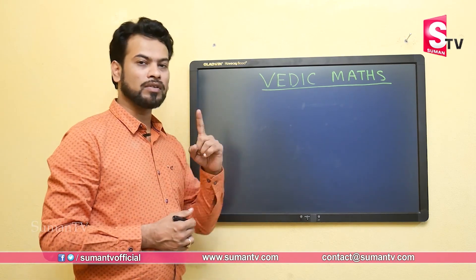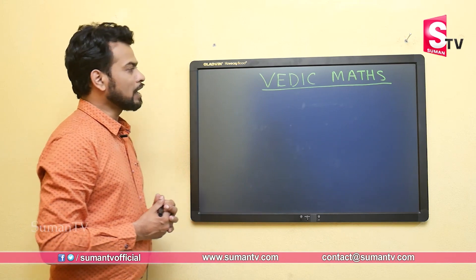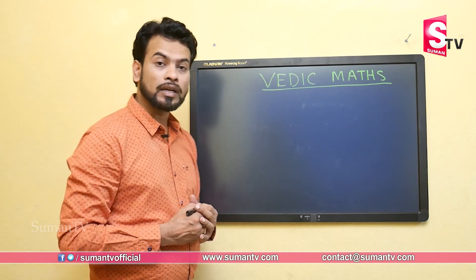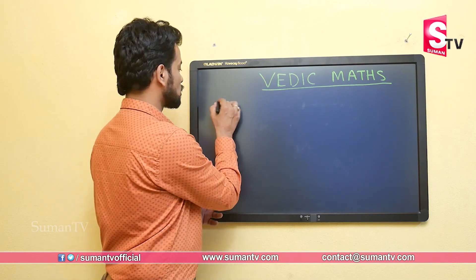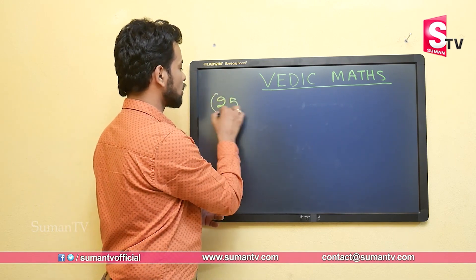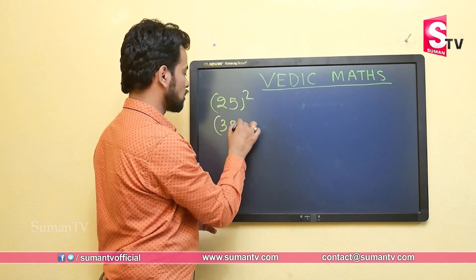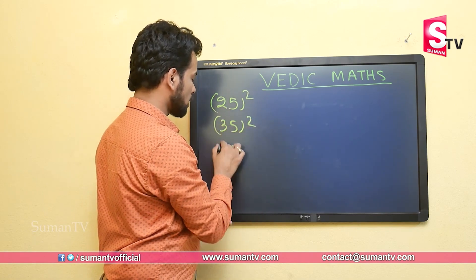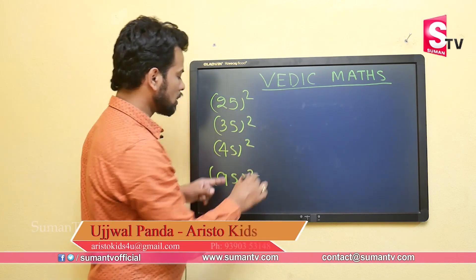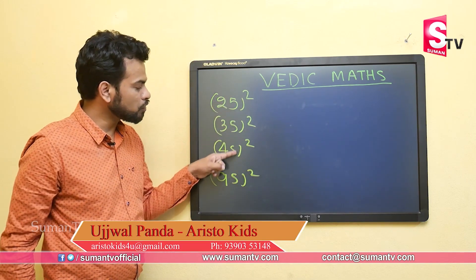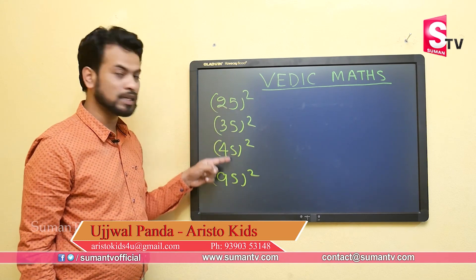We will start with a very easy one. We will try to find the squares of numbers which are ending with 5 — it means 25 square, 35 square, 45 square, 95 square. All the numbers which are ending with 5, meaning whose unit digits are 5.